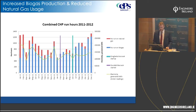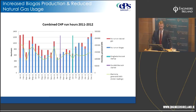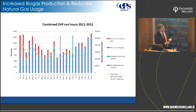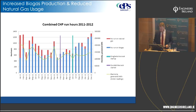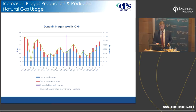Looking at the combined CHP run hours from 2011 onwards, you can see Dundalk coming online and then the Drogheda CHP following. What's notable is that not only has overall usage not changed drastically, but our reliance on natural gas has completely reduced. Breaking it down by site, Dundalk shows less natural gas use, though part of that is also due to being less wasteful than before we entered the trial.